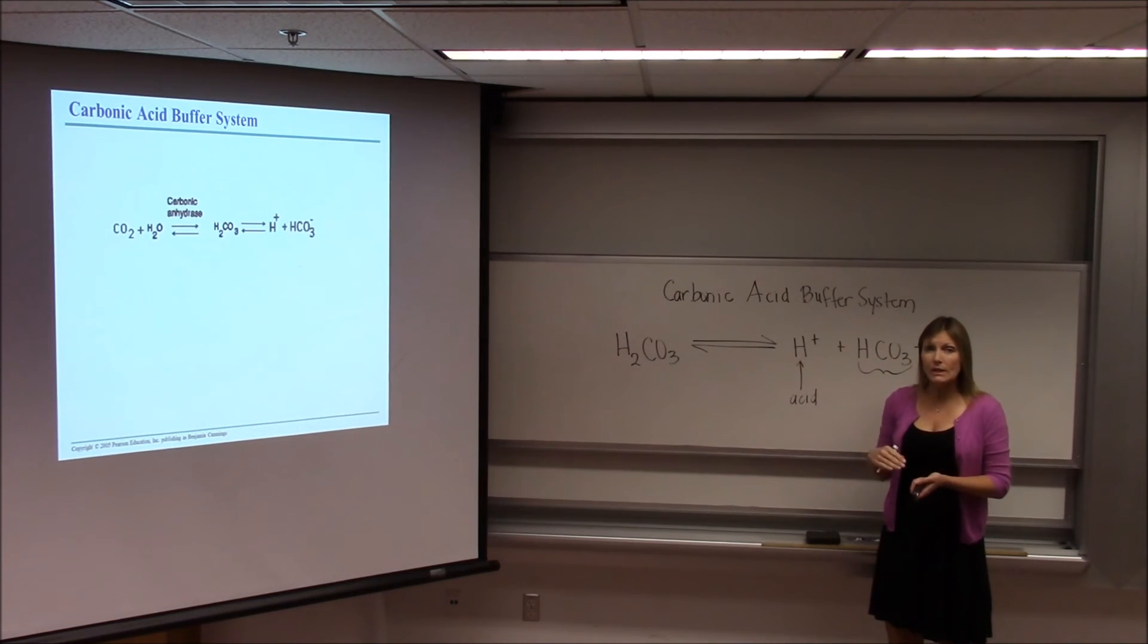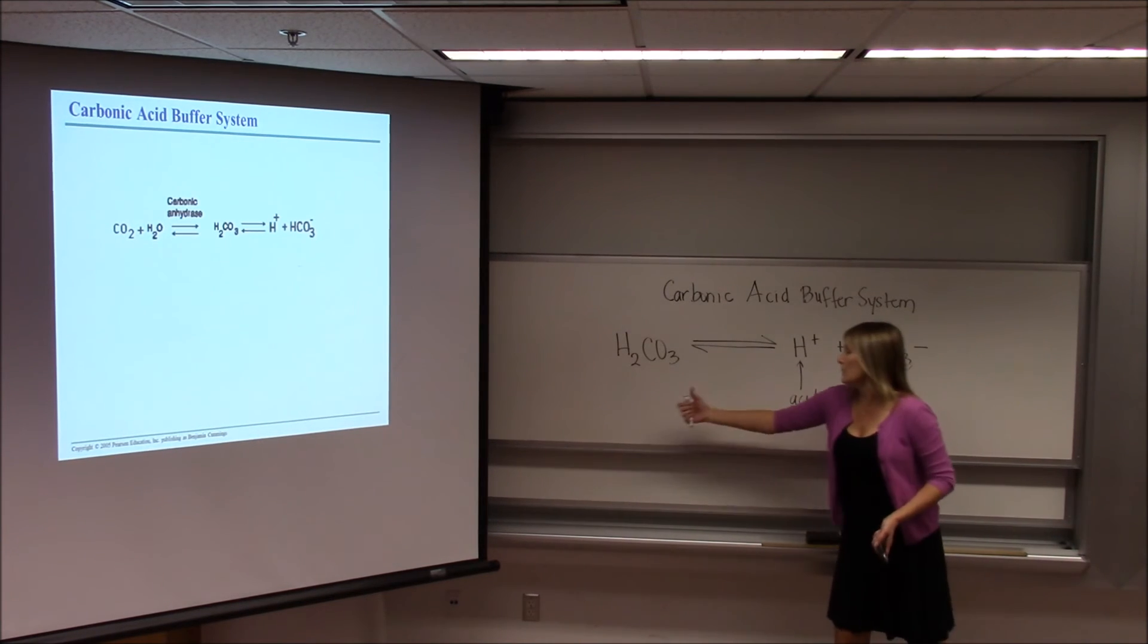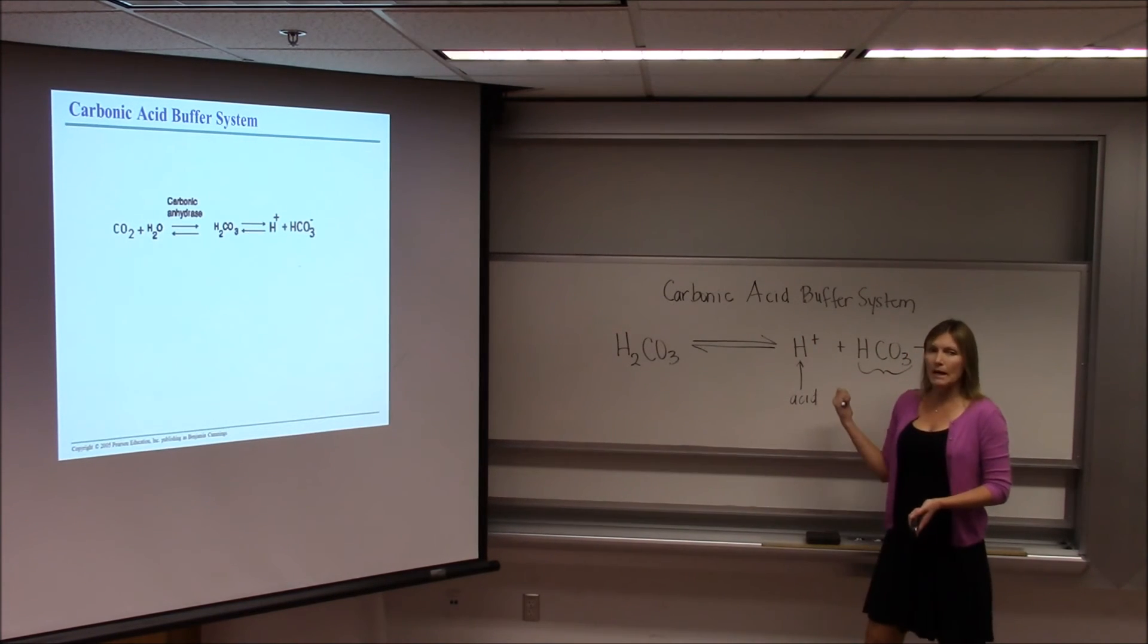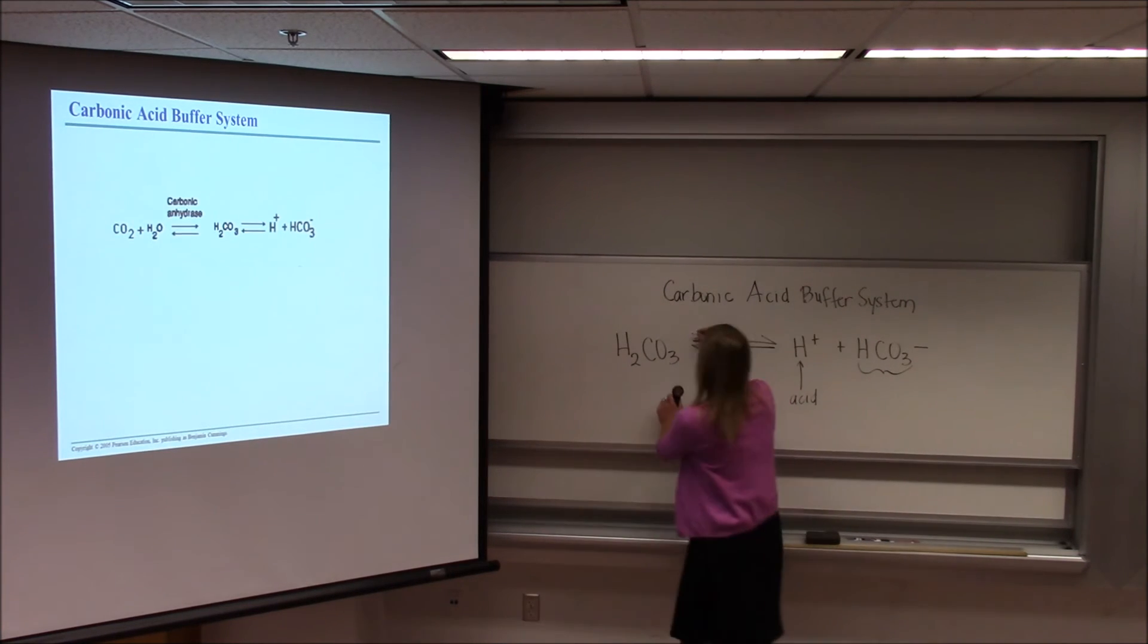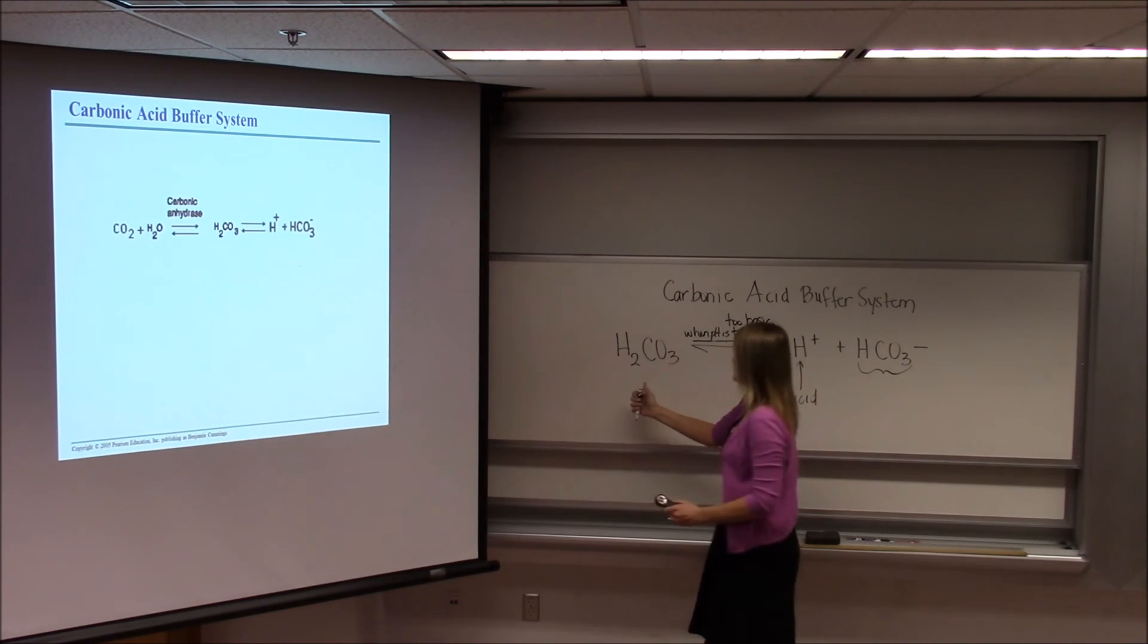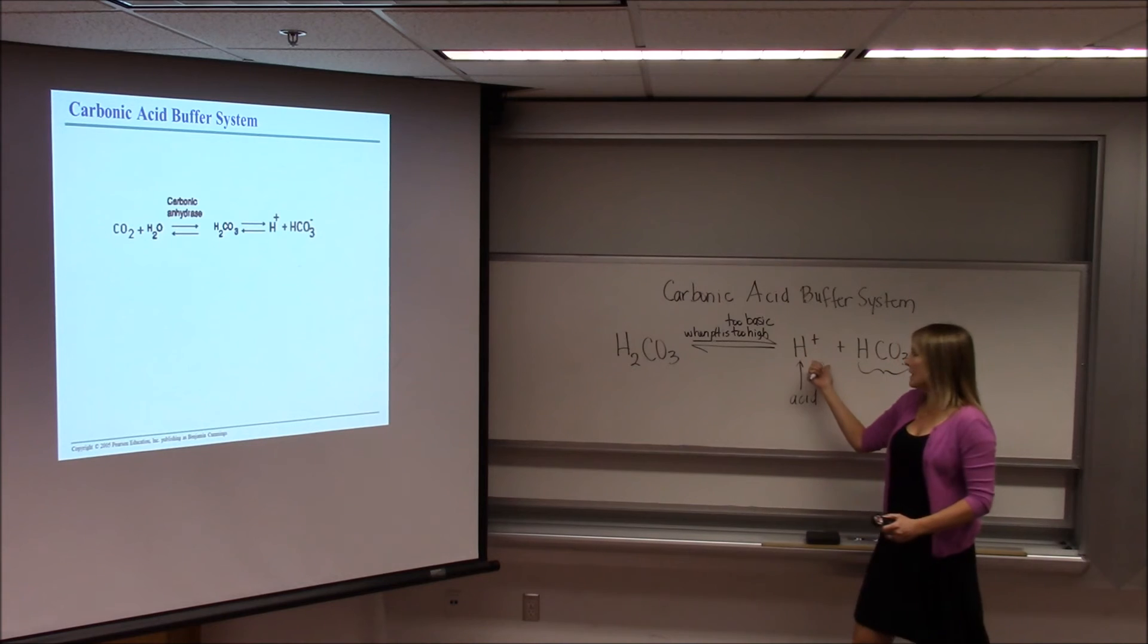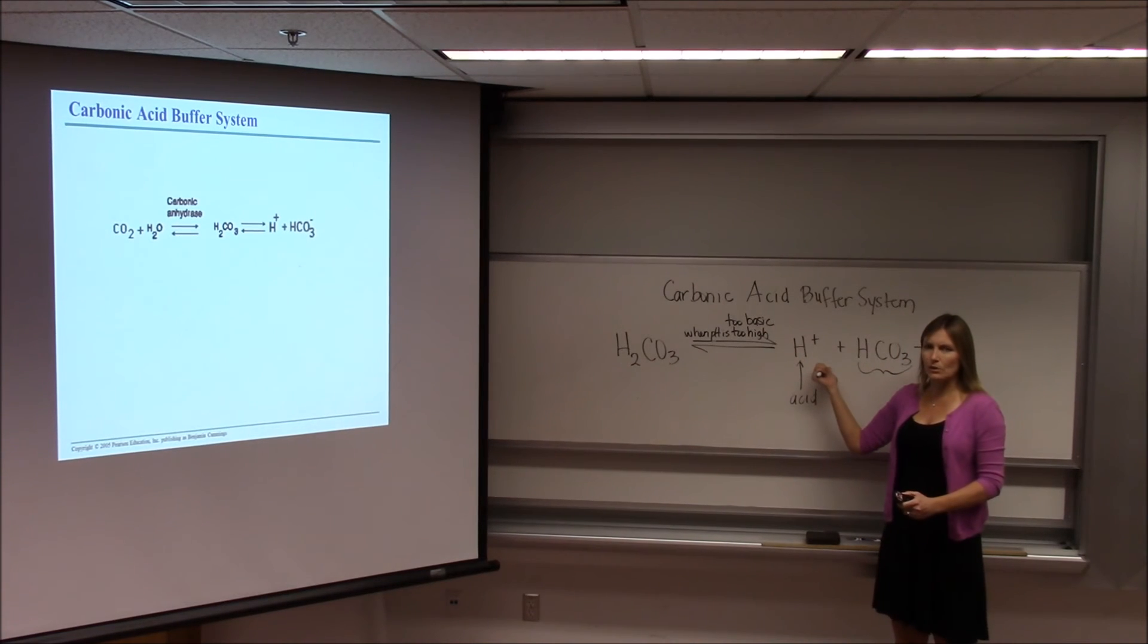So when would we want the pH to go down? Well, when the pH gets too high. So if the pH in your blood gets too high, you would want to release some hydrogen ions to bring that pH back down again. So when pH is too high, in other words, too basic. If the pH becomes too basic, we want to release some hydrogen ions to make that solution a little more acidic and bring the pH back down to normal.